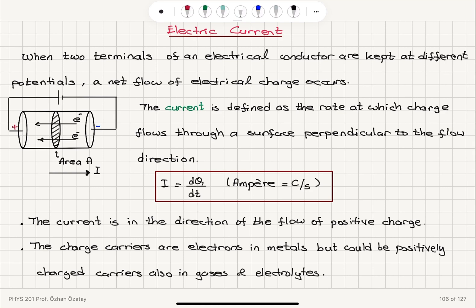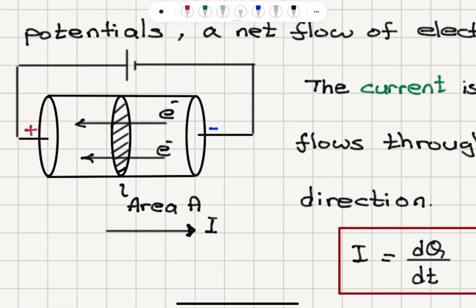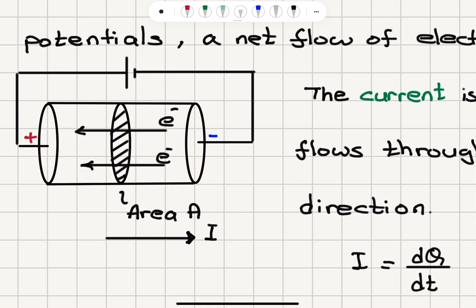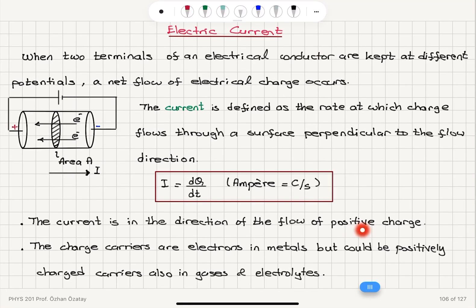We have to be careful about the direction of current. The current is defined in the direction of the flow of positive charge. Inside an electrical conductor, positive charges are immobile — they don't move anywhere — so it is the electrons that move toward the positive terminal. We define current direction as the direction of flow of positive charge, which opposes the flow of negative charge. This is like imagining that positive charges can flow — in fact, they cannot. Current flows opposite to the direction of electron flow.